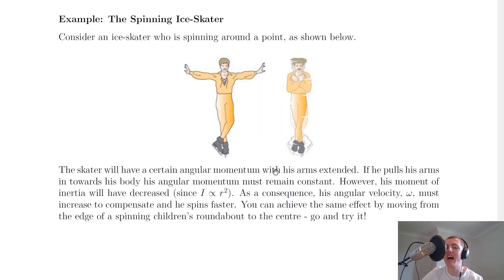Let's break down why this happens in our example of the spinning ice skater. The skater will have a certain angular momentum with his arms extended. If he pulls his arms in towards his body, his angular momentum must remain constant. So the total angular momentum before must equal total angular momentum after. We're talking about arms extended versus arms in towards his body.